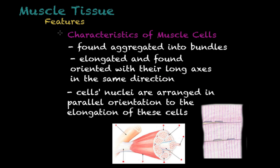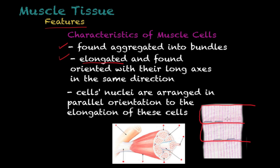Additional characteristics of muscle tissue cells: these cells are found aggregated into bundles, because they work in groups — this is the only way muscle tissue can actually produce movement. These cells are also elongated, meaning they are long cells, and they are oriented with their long axis in the same direction.